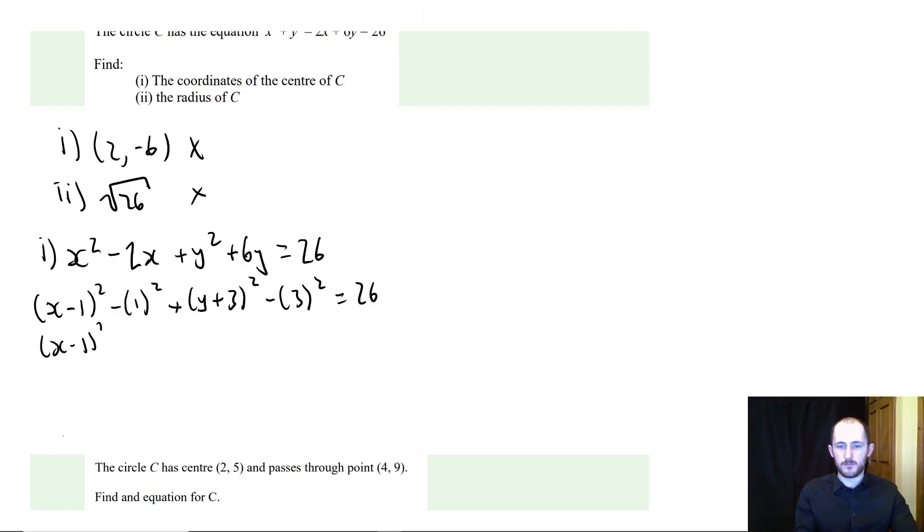This will give me x minus 1 squared minus 1 squared. And then we can do the y, y plus 3 squared minus 3 squared equals 26. And now we're going to expand those brackets, not the x brackets, we're going to expand the numerical ones. So 1 squared is 1 minus, 3 squared minus 9 equals 26.